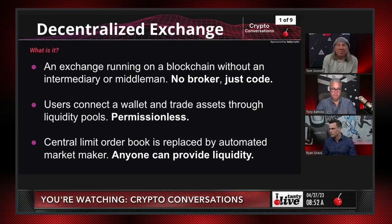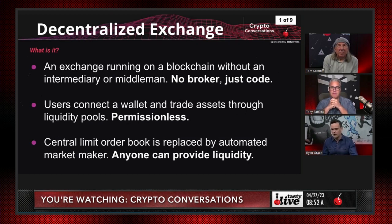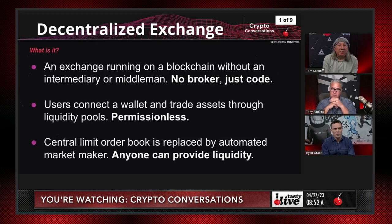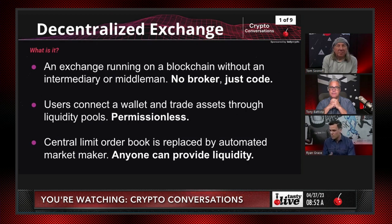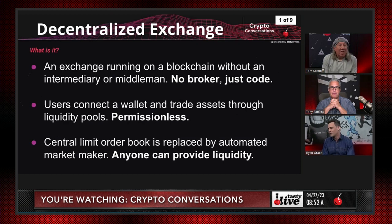It's permissionless. You're not constantly connected. When you want to transact — whether that's every day, once a month, whenever it is — you go and you connect. Then you transact pending liquidity being available. That central limit order book does not exist and is instead replaced by an algorithm that most decentralized exchanges use called an automated market maker. And anyone can provide liquidity as well, which is pretty cool.